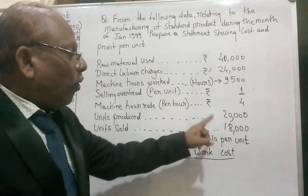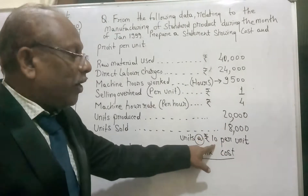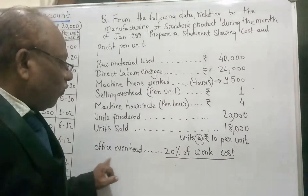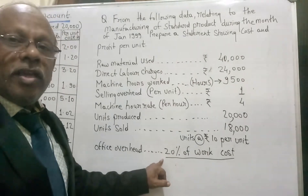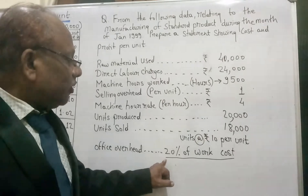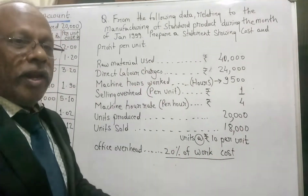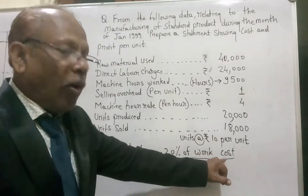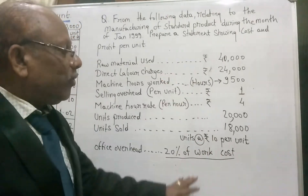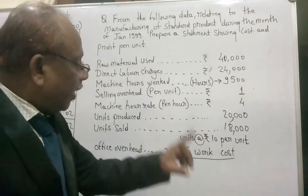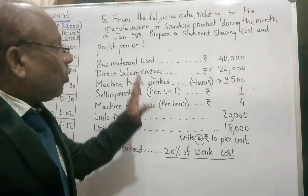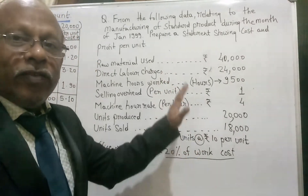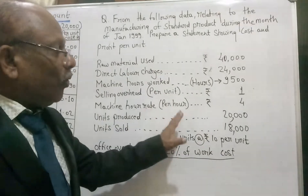Office overheads are given as a percentage — 20% of work cost. After adding factory overheads to prime cost we get work cost, and on that work-cost amount we calculate 20%. The amount of work cost is not directly given in the problem; we have to calculate work cost first, then find 20% of it. We need to understand the relationship between all this given information before solving.